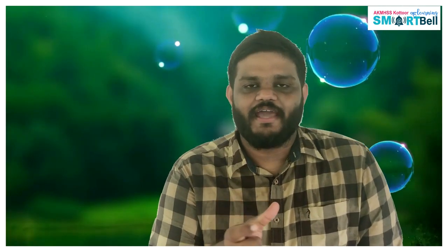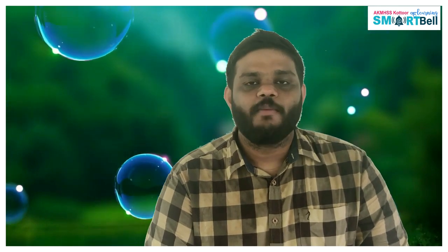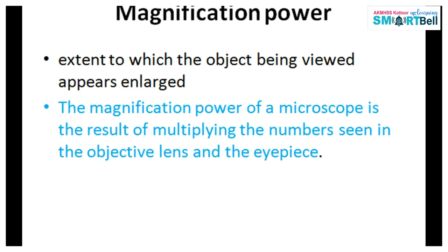You can see some writings on the eyepiece and objective lens like 10x and 45x. What is this 10x, 45x? That is the magnification power of the microscope. Magnification power is the power of the microscope obtained by multiplying the numbers written on the objective lens and the eyepiece.